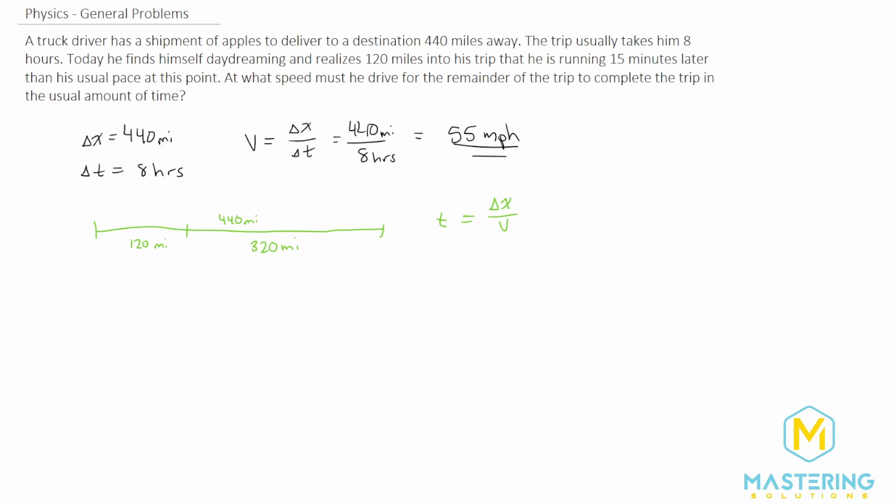And now we want to plug in what his typical time is for the 120 like we talked about. So we'll use the 120 miles divided by his typical velocity of 55 miles per hour. The miles will cancel, leaving us with hours on top. The units for that will be essentially miles over one. And we're dividing by a fraction. When we divide by a fraction, it's the same as multiplying by the reciprocal.